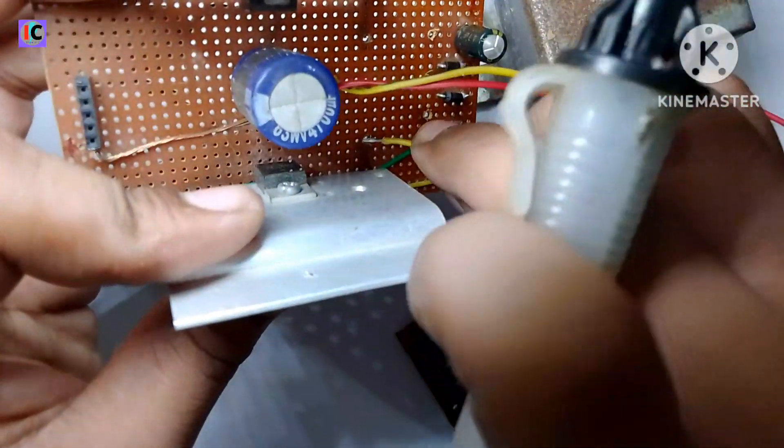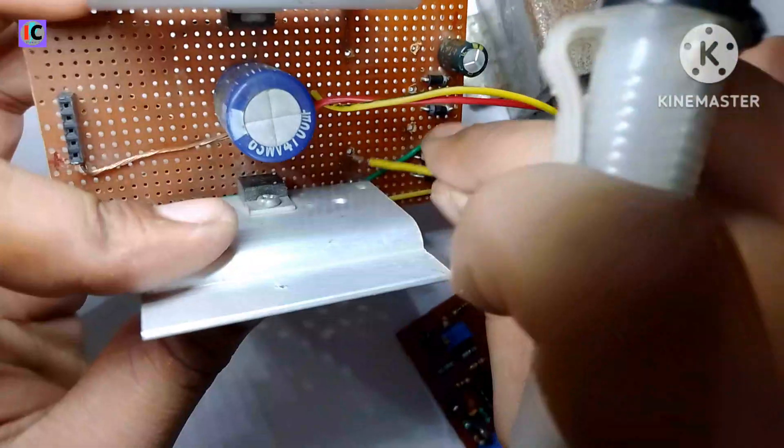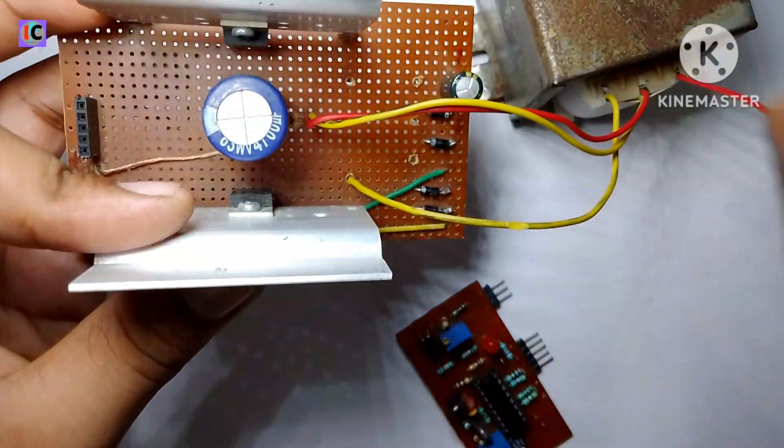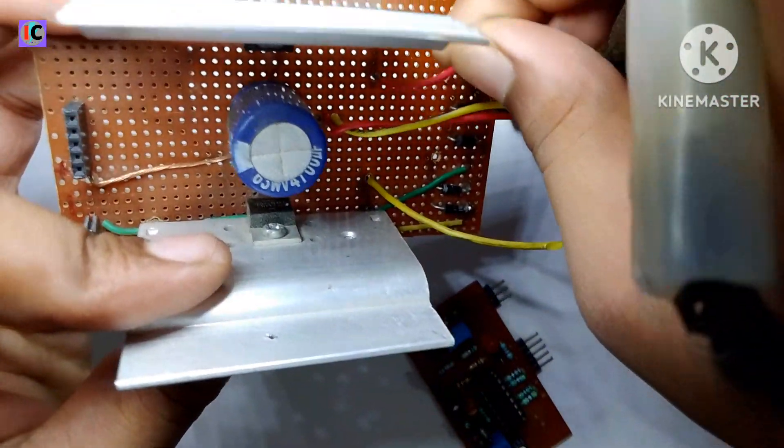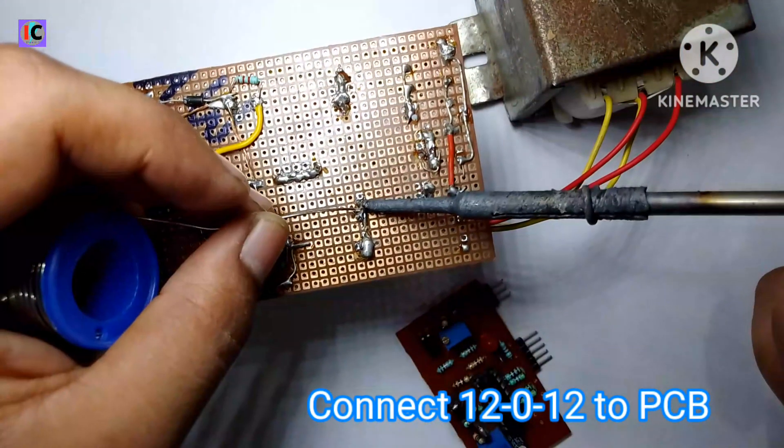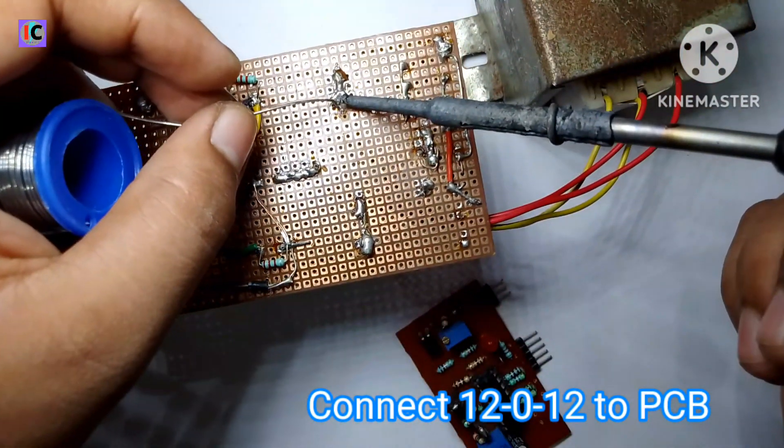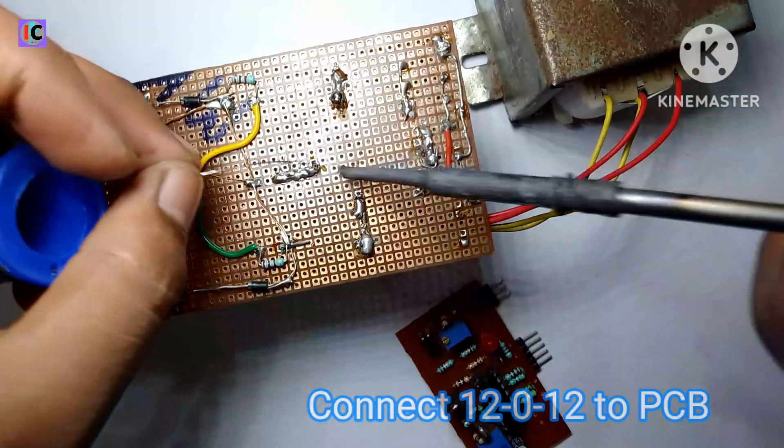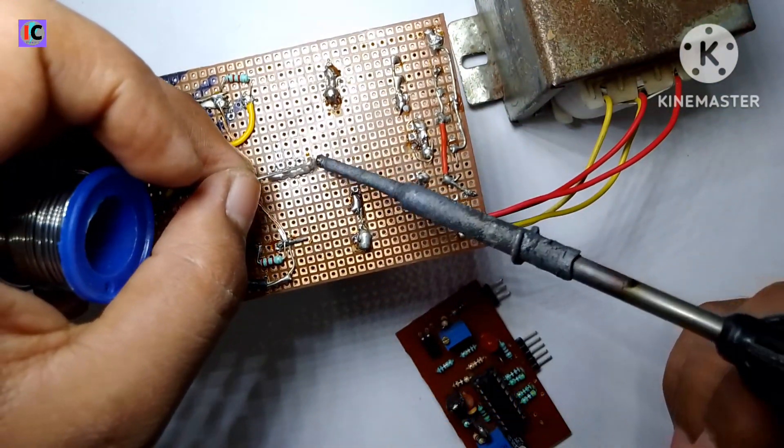The center tap middle point, also called the zero volt coil, is connected to the positive. The secondary side-by-side coils are connected to the drain pins of the MOSFET, like in the back side of the circuit.